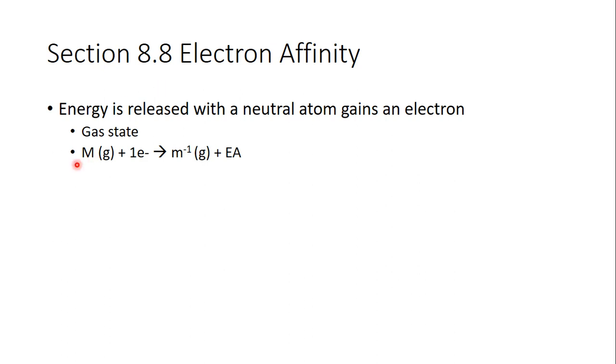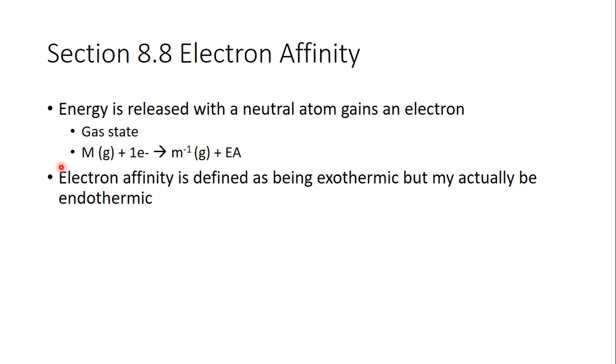So usually energy is released. A metal plus one electron goes to M minus 1 plus electron affinity energy. It's, like I said, generally exothermic - energy leaves. It could be endothermic, though, for some atoms.